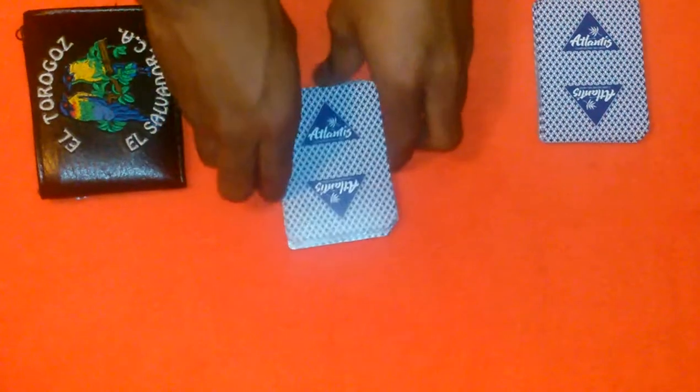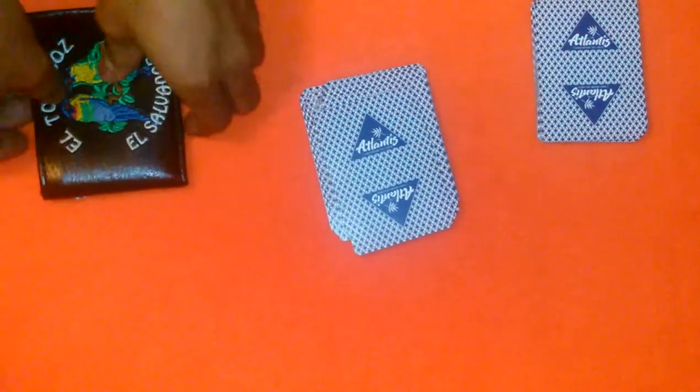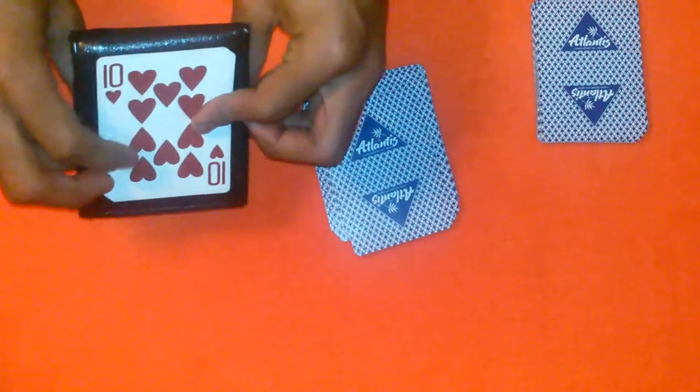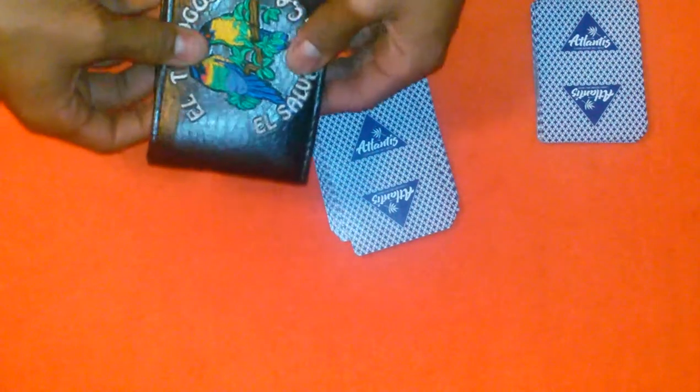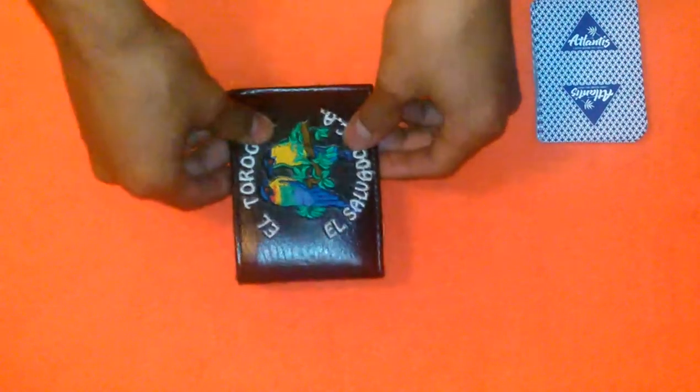Once you do that you keep it there, and you take the wallet and say I'm going to put this wallet on top of the deck. When you do that, you are completely putting the card that you predicted already on top of the deck. Square it up.